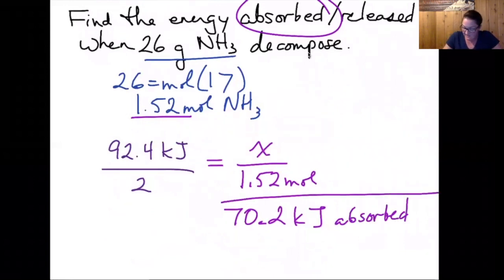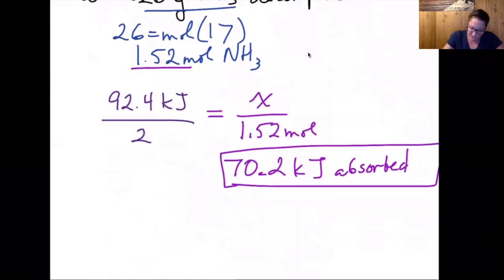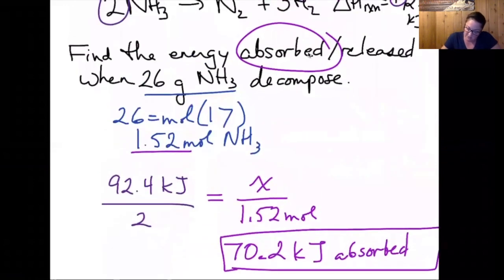I tend to pretty consistently set these up so that what I have in my proportion is delta H reaction over a coefficient for the reaction. And the coefficient I use depends on which thing I'm talking about. So since we're going to use the grams of NH3 and the moles of NH3, I want to use the coefficient of NH3.